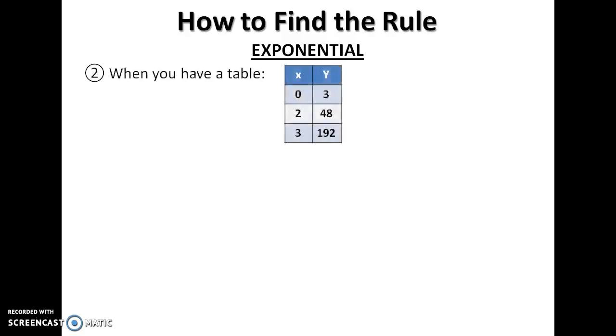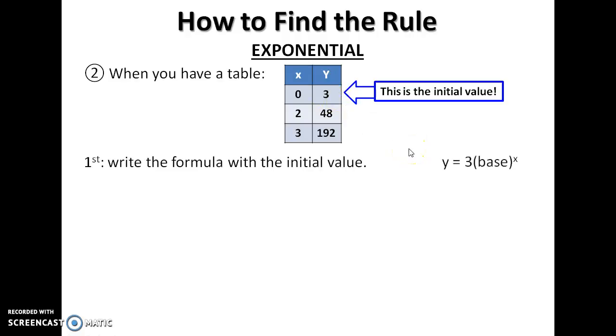Table of values, same idea. And again, here we know that this is exponential because the initial value is not (0, 0). And that 3 is the a value. So I can replace that in right away.